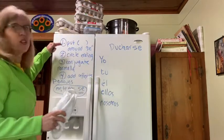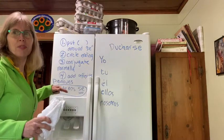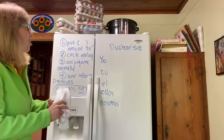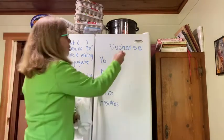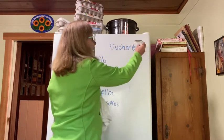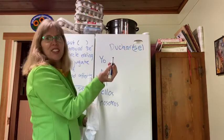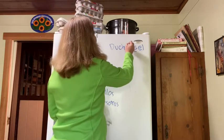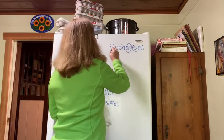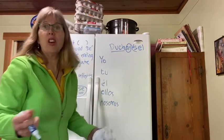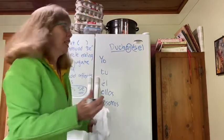You should have followed the four steps just like I did. First, you put parentheses around the 'se'. Second, you circled the ending. Third, you conjugate normally.